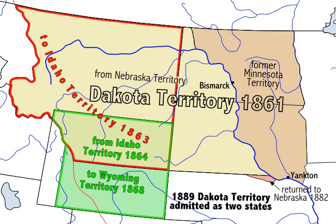The territorial capital was Yankton from 1861 until 1883, when it was moved to Bismarck. The Dakota Territory was divided into the states of North Dakota and South Dakota on November 2, 1889.